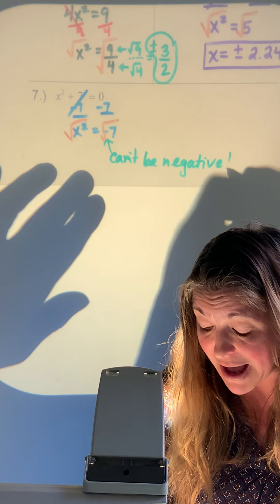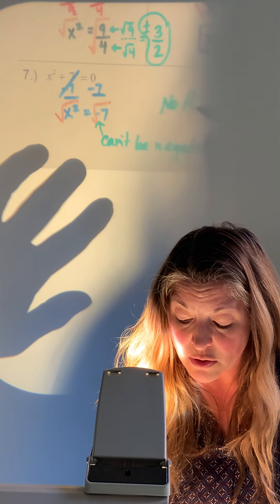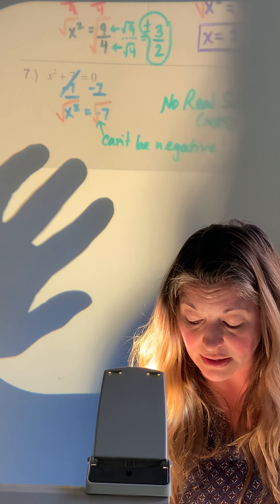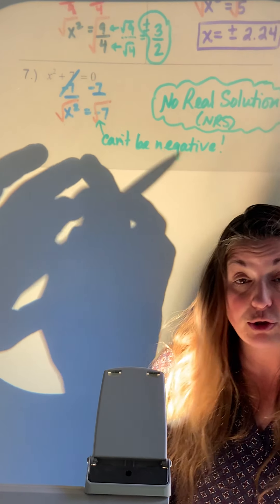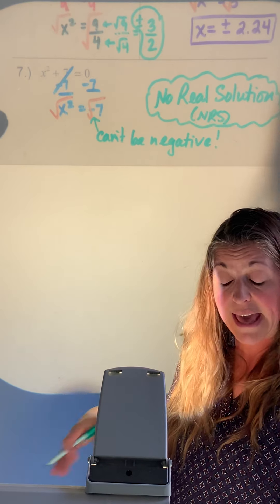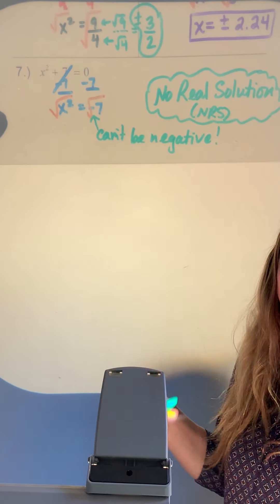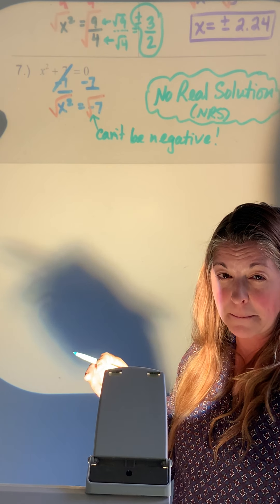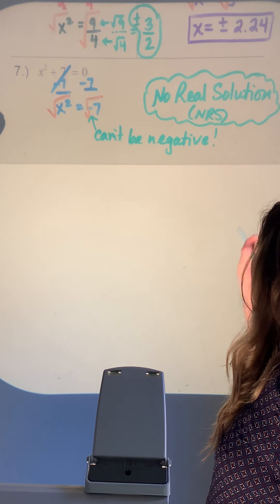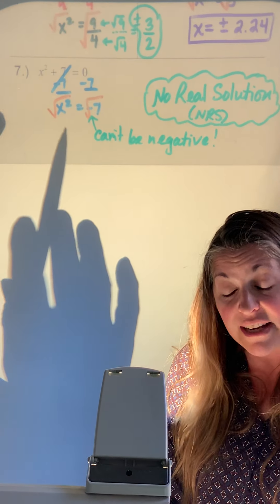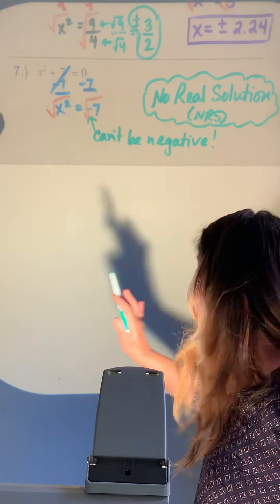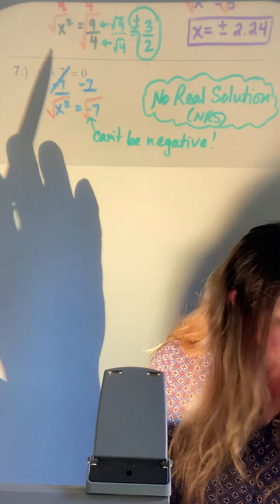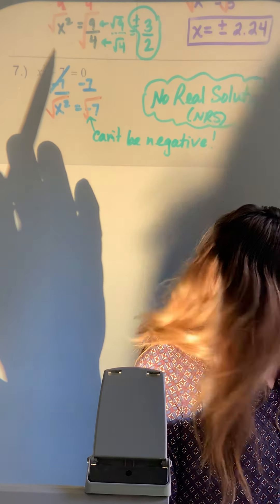The official answer here is no real solution — you can abbreviate it as NRS. Importantly, you cannot write just 'no solution' as we would with regular equations, because technically there is an answer; it's just imaginary, not real. So write no real solution. Any time x squared ends up negative after checking your work, that's your answer. There will be one like this on the homework and on the quiz.